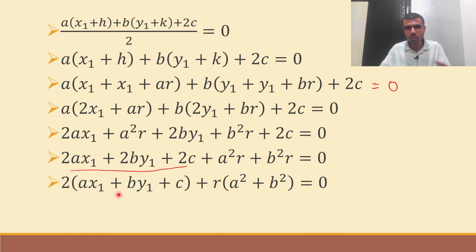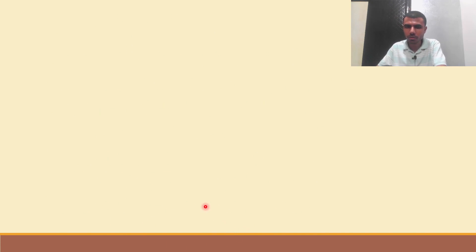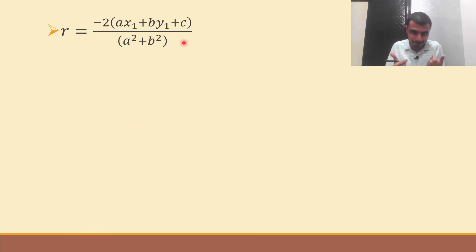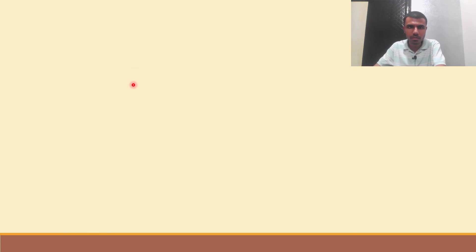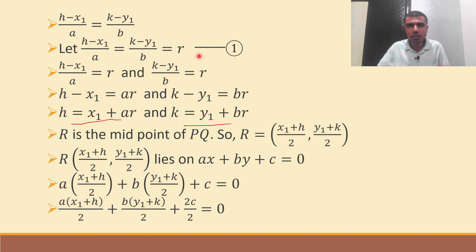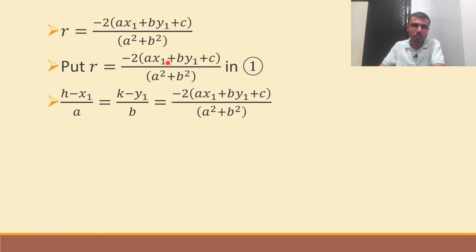Sending the 2 times (Ax1 + By1 + C) to the RHS and dividing by (A squared + B squared): R equals minus 2 times (Ax1 + By1 + C) divided by (A squared + B squared). Now just put this value of R into equation 1. Substituting R, this is exactly what they asked us to prove — and we got it.